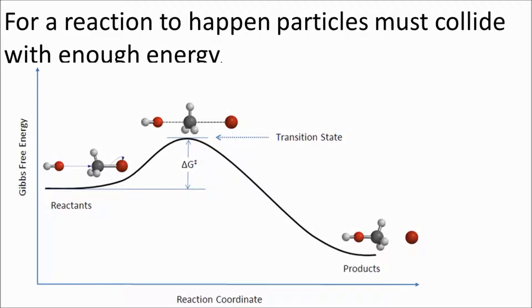The little hill on the graph is known as the activation energy barrier. And if particles don't collide with enough energy, the activation energy barrier is not passed and no reaction can take place.